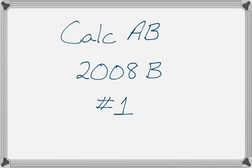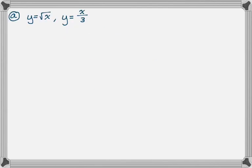Okay, this can be number one from the 2008 B form of the Calc AB exam, and it's an area volume problem, so let's just get started. So the problem says that R is a region in the first quadrant bounded by the graphs of y equals the square root of x and y equals x over 3. And in part A, what we need to do is we need to find the area of R.